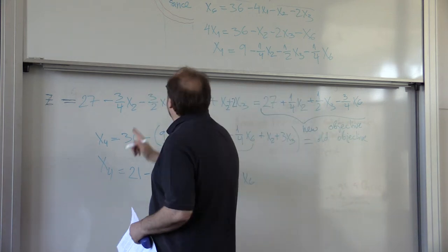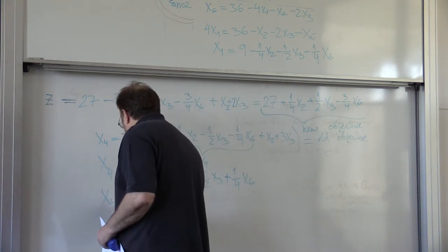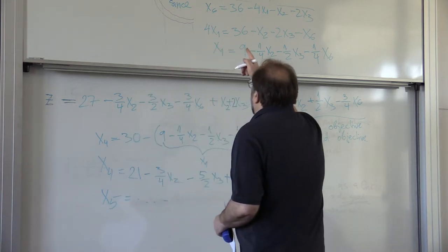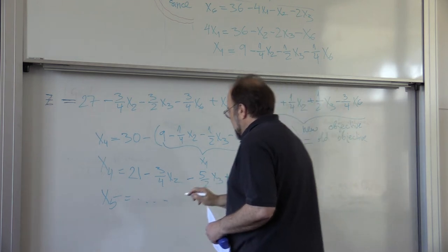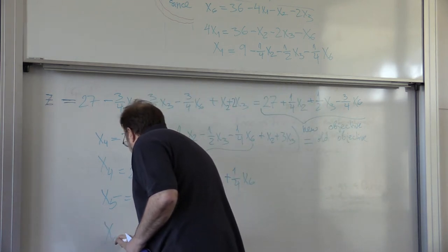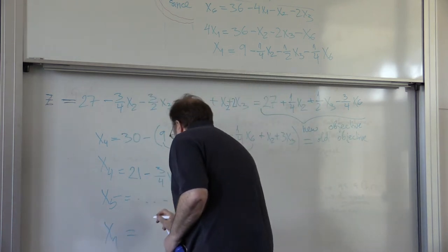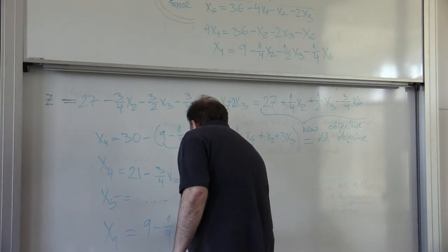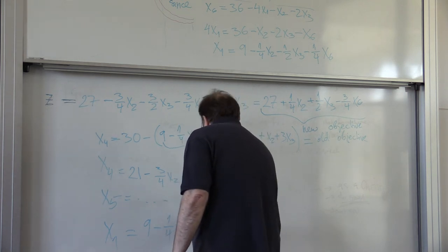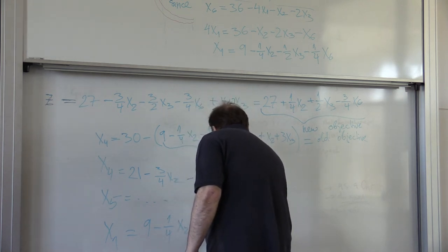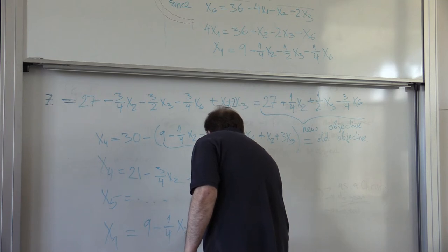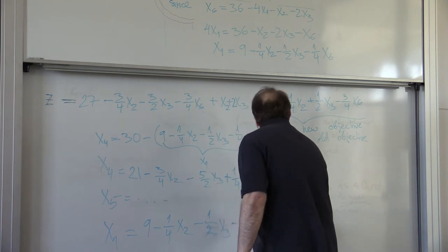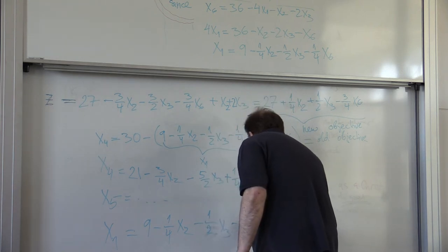You do exactly the same with x5. You will get something here, and the very last one, this is the one that we are using to eliminate. It will be just x1 equals 9 minus 1 quarter x2 minus 1 half x3, and minus 1 quarter x6.